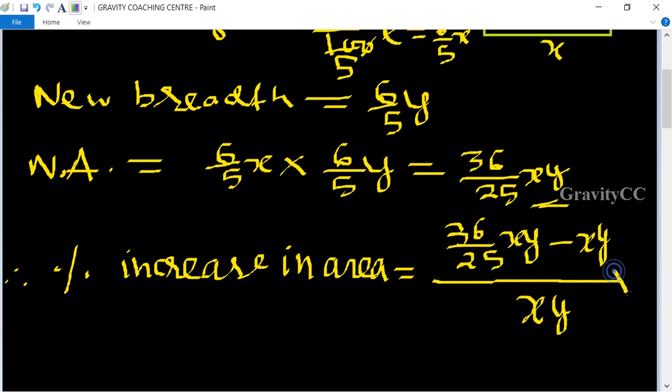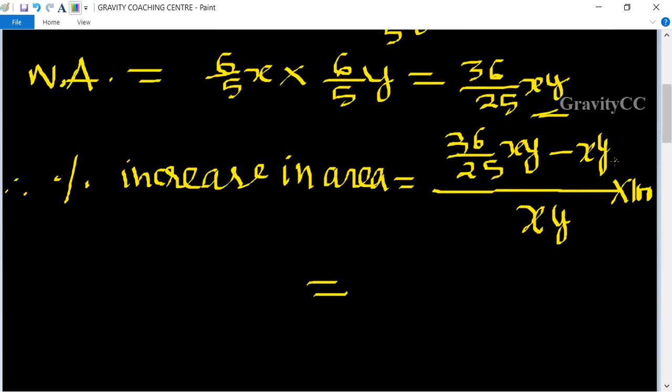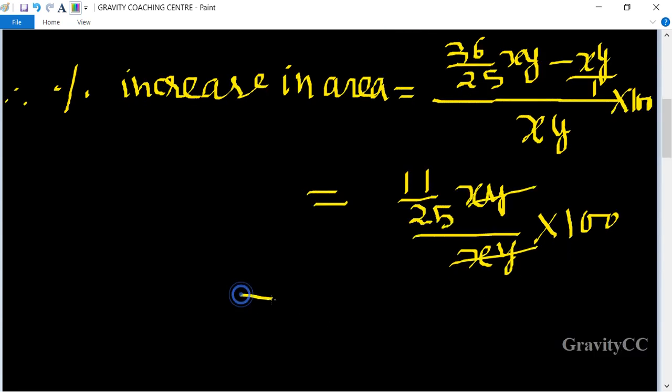After simplifying, we get 11 upon 25 x y upon x y multiply 100. x y cancels, so we get 11 upon 25 into 100, which equals...